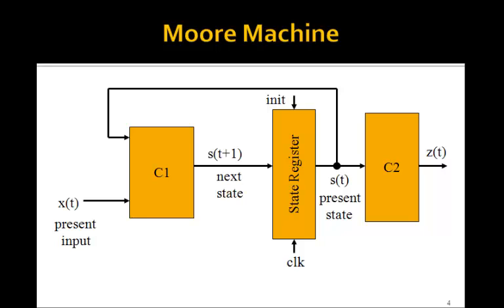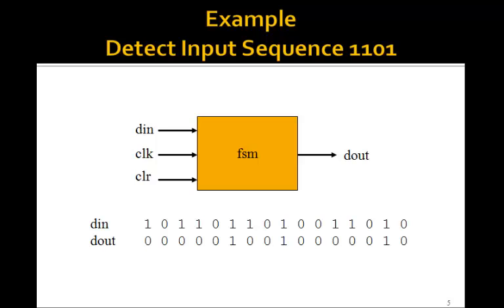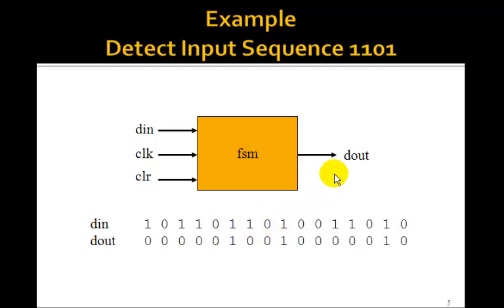Now let's do an example of a Moore machine that will detect the input sequence 1,1,0,1. So we're going to have this finite state machine — it's going to be a Moore machine. The input is D in. Every rising edge of the clock is going to advance to the next input. And we want D out to be 1 any time we detect the sequence 1,1,0,1. We have the input sequence 1,0,1,1,0,1.